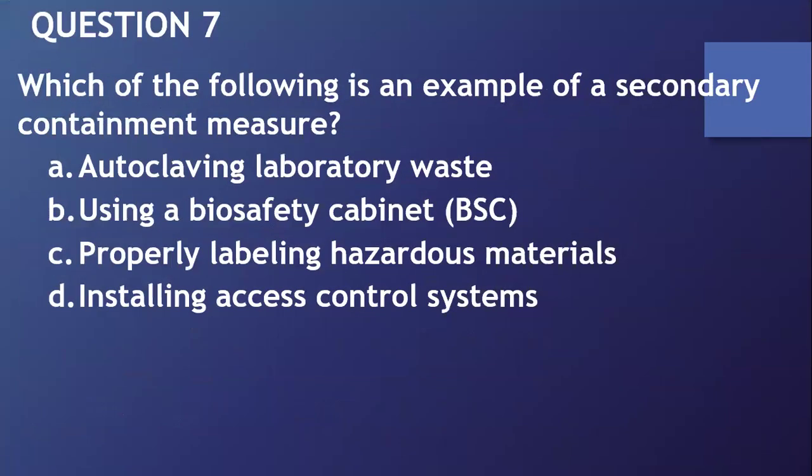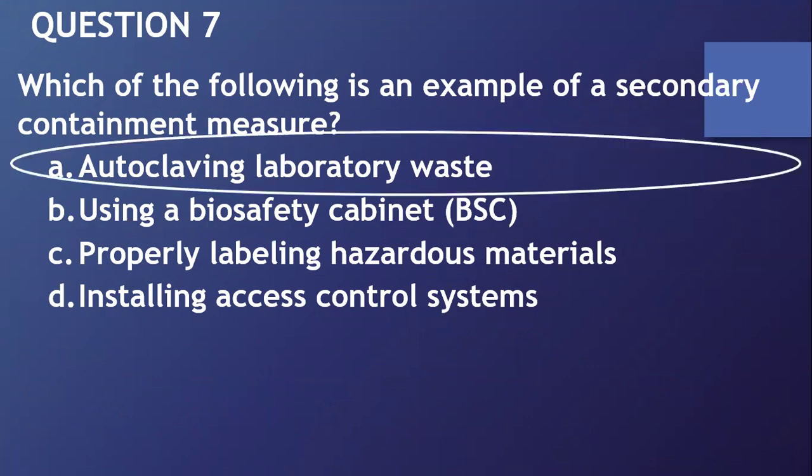Question number seven: which of the following is an example of a secondary containment measure? A, autoclaving laboratory waste. B, using a biosafety cabinet. C, properly labeling hazardous materials. D, installing access control programs. The answer is A.